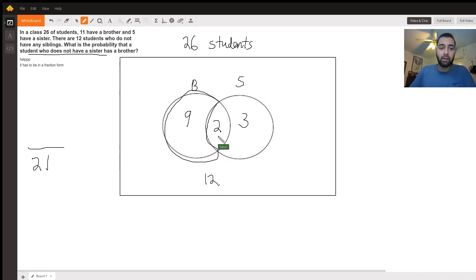So of those who do not have a sister, out of the 21, 9 have a brother. And if we were to simplify that, the fraction boils down to 3 over 7. Therefore, the probability that a student who does not have a sister has a brother is 3/7.